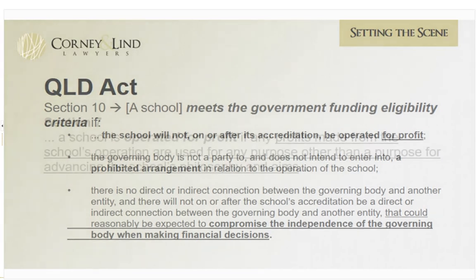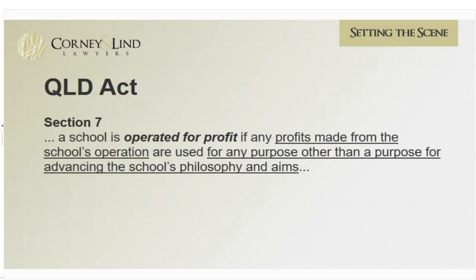Queensland Act section 7 unpacks what 'operated for profit' means. Effectively, a school is operated for profit if its profits are used for any purpose other than the advancement of the school. For example, if profits are siphoned off to a parent religious body, the school is being operated for profit. The language in these Acts about 'for profit' and 'not for profit' is essentially to prohibit a school from stripping assets or income out to another entity for purposes other than advancing education through the school.